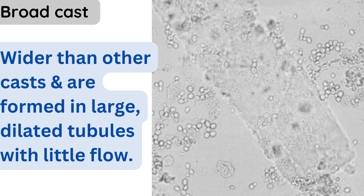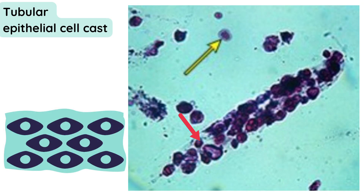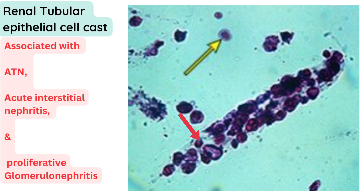Broad casts suggest significant tubular damage and impaired kidney function. Lastly, tubular epithelial cell casts contain desquamated renal tubular epithelial cells. They are observed in conditions such as acute tubular necrosis, acute interstitial nephritis, and proliferative glomerulonephritis, indicating tubular injury or inflammation.